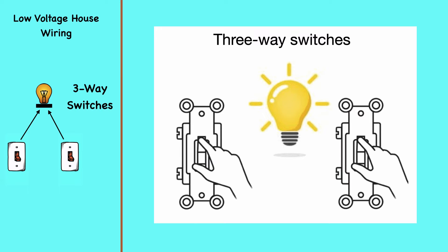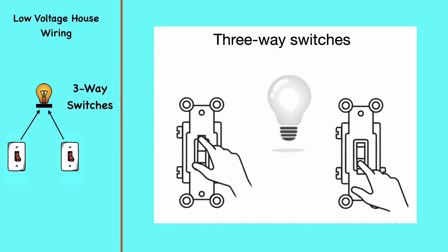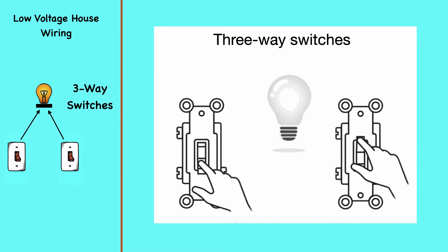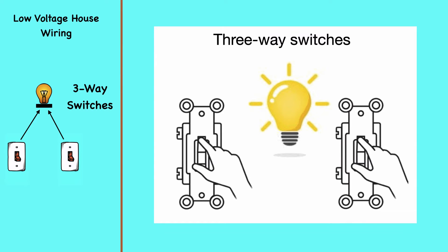Three-way switches have three terminals to carry circuit electricity, and one terminal for a ground wire. Of the three circuit terminals, one is called the common, and the other two are known as travelers. The common terminal may be labeled and is usually a different color than the traveler terminals.